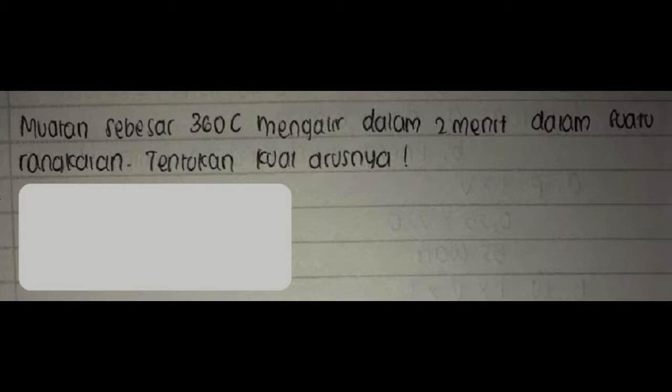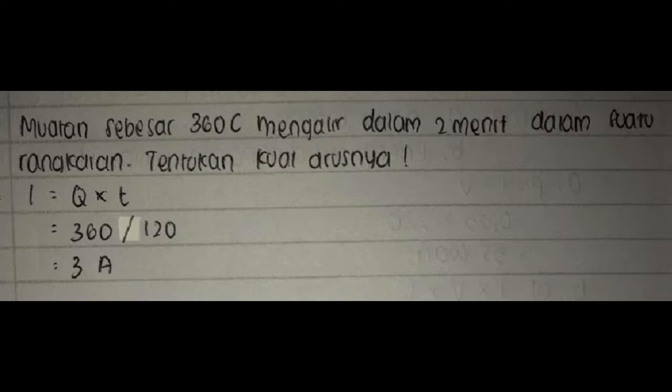Soal 11, muatan sebesar 360C mengalir dalam 2 menit dalam suatu rangkaian, tentukan kuat arusnya. Jawaban: I sama dengan Q per T sama dengan 360 per 120 sama dengan 3 ampere.